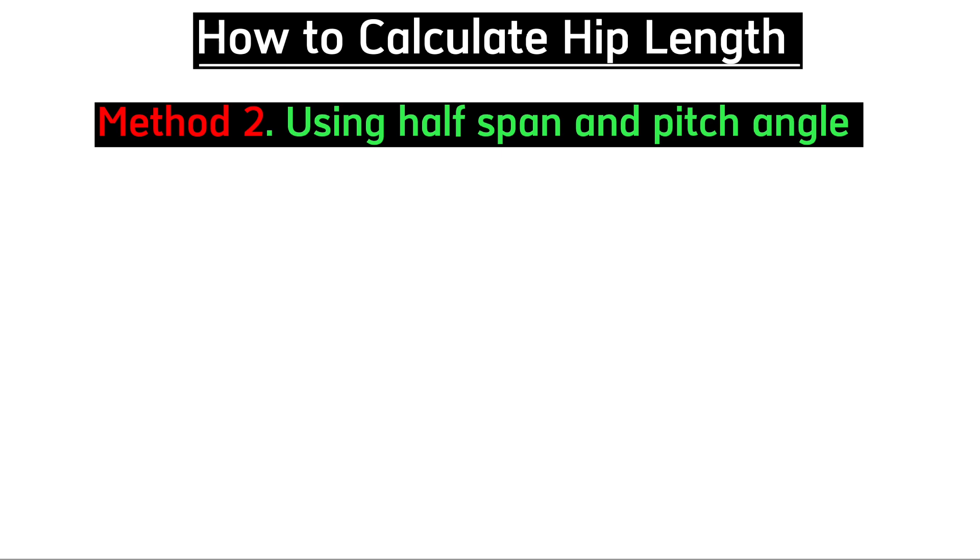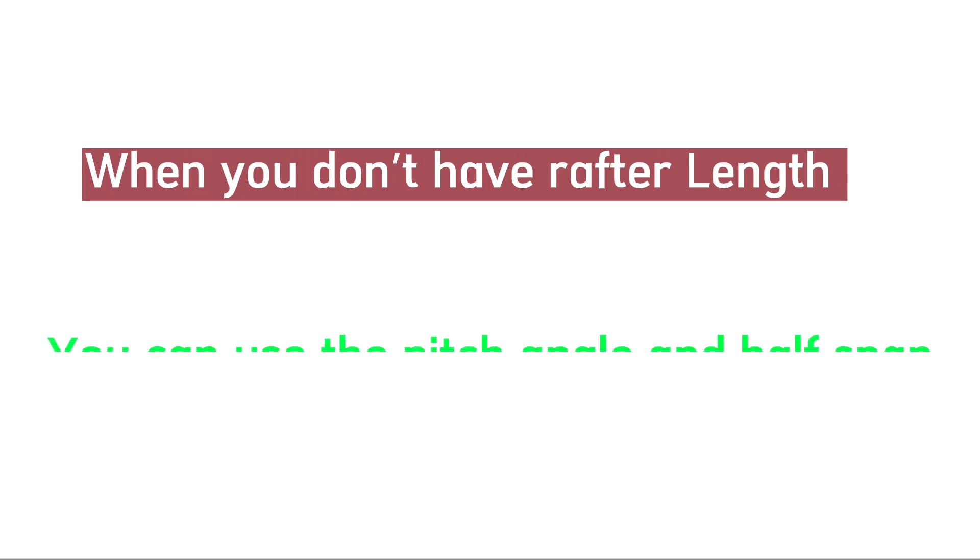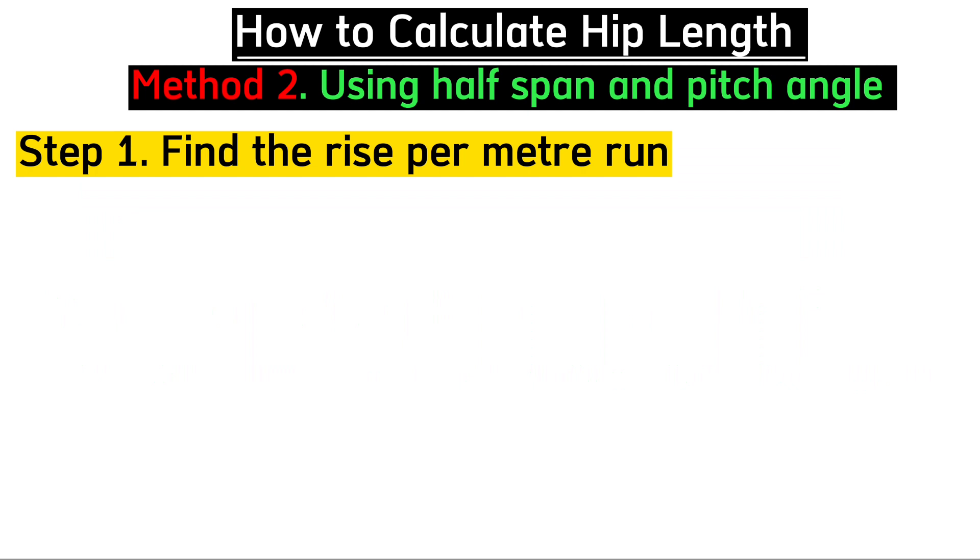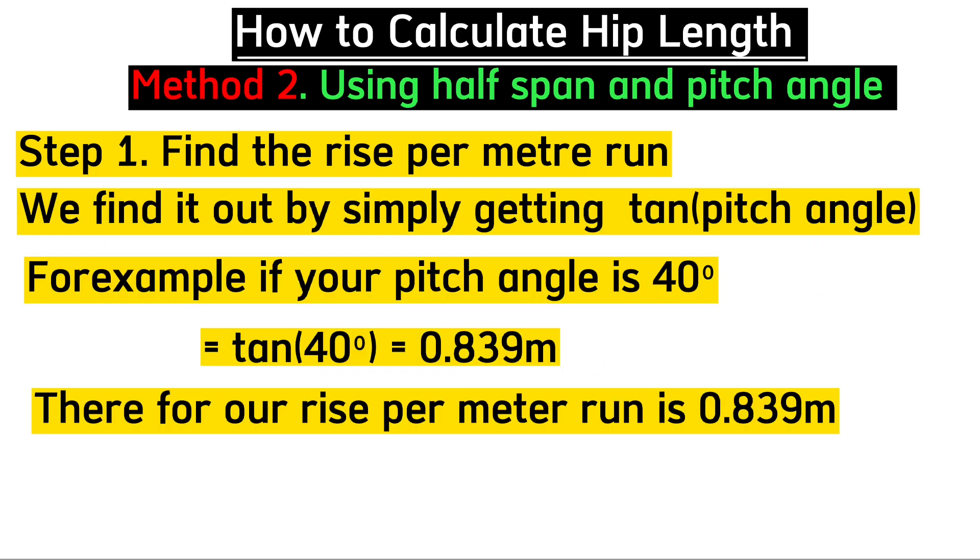Method two involves calculating hip length using half span and pitch angle. When you don't have the rafter length, you can still use the pitch angle and half span. The first step is to find the rise per meter run. We get this by simply getting the tangent of your roof pitch angle.